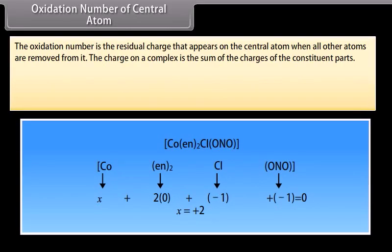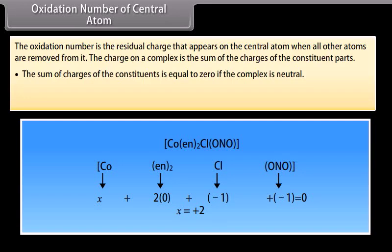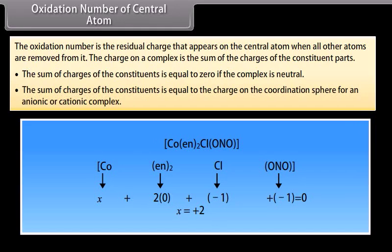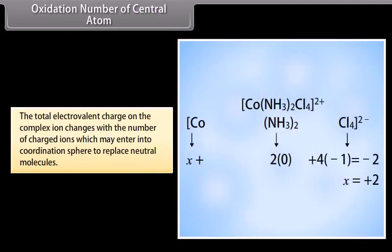Oxidation Number of the Central Atom. The oxidation number is the residual charge that appears on the central atom when all other atoms are removed from it. The charge on a complex is the sum of the charges of the constituent parts. The sum of charges of constituents is equal to zero if the complex is neutral. The total electrovalent charge on the complex ion changes with the number of charged ions which may enter the coordination sphere to replace neutral molecules.